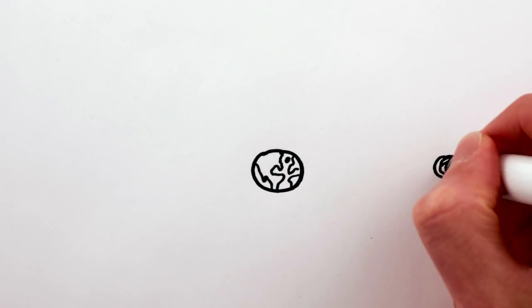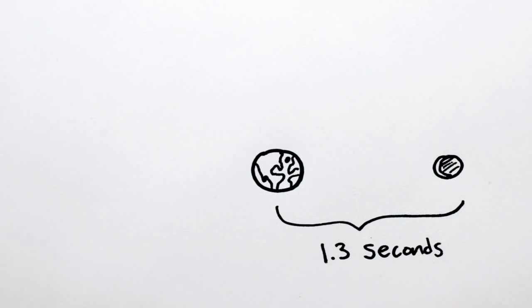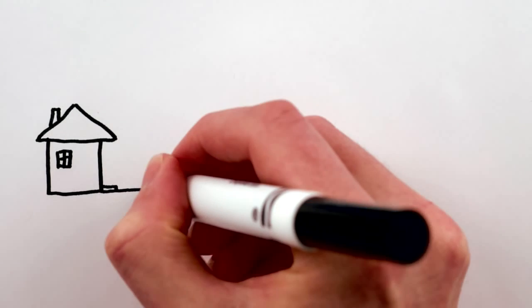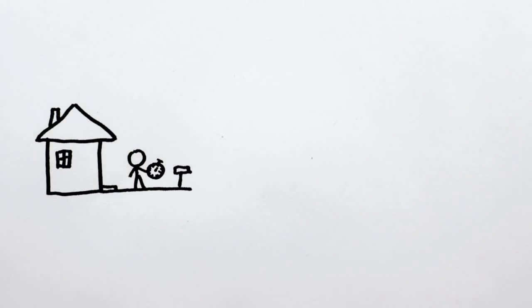You may have heard physicists describe the moon as being 1.3 light seconds away, or the sun as 8 light minutes away, and thought, what is this nonsense measuring distances with time? But actually, we measure distances using time almost every day.